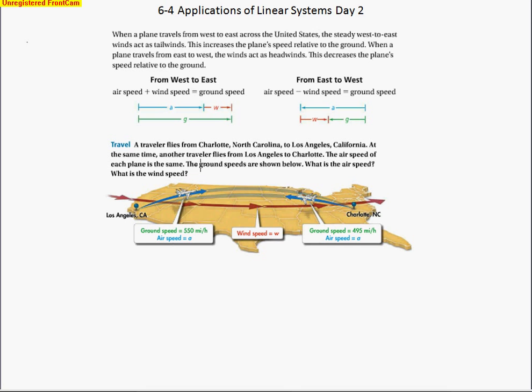So at the same time another traveler flies from Los Angeles to Charlotte. The air speed of each plane is the same. So the ground speeds are shown below. And it says what is the air speed and what is the wind speed?